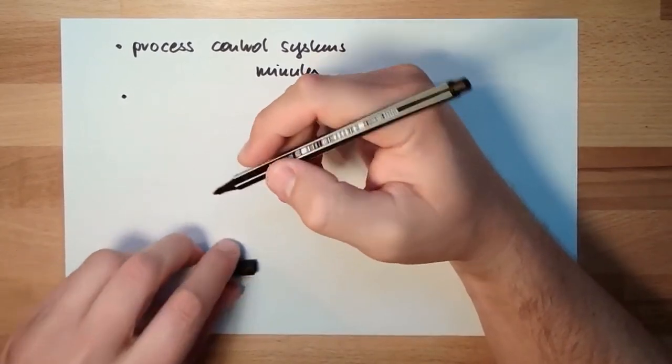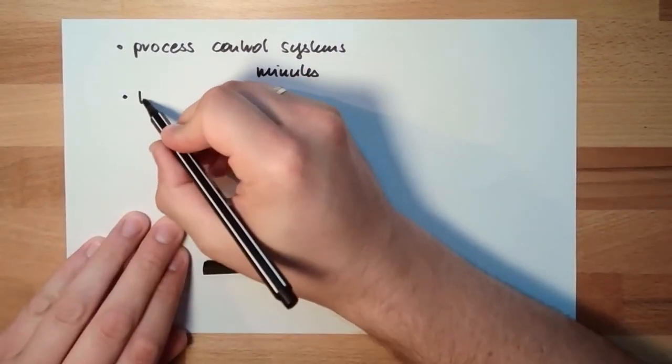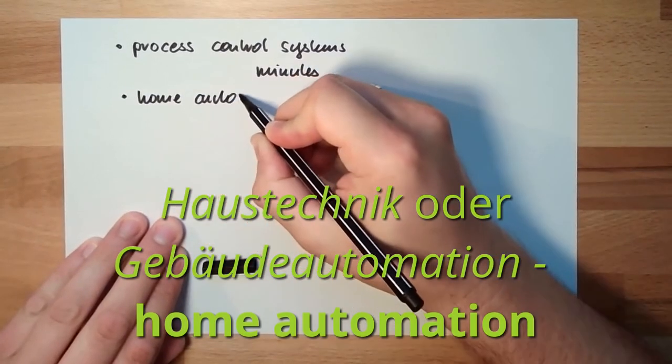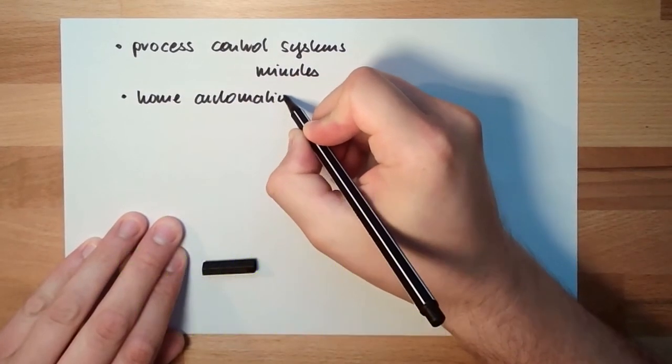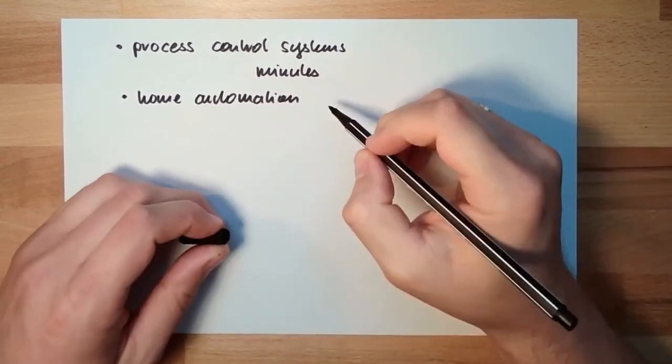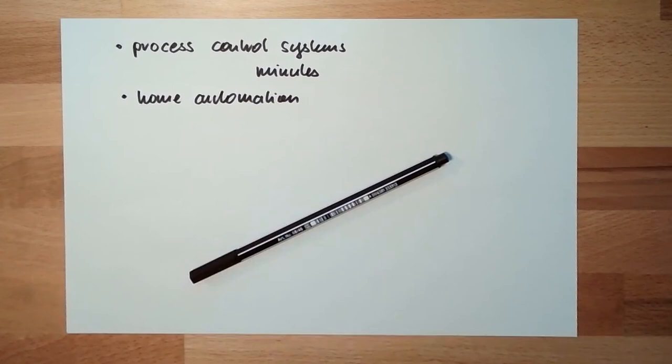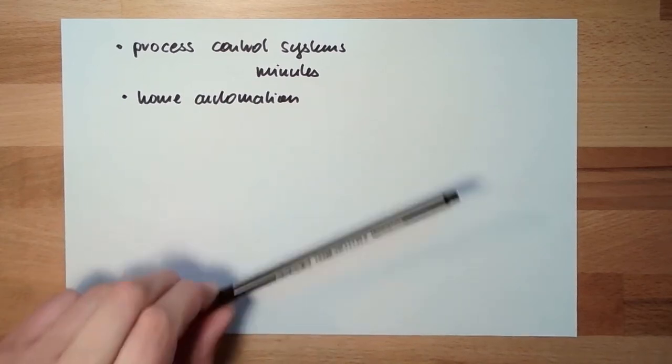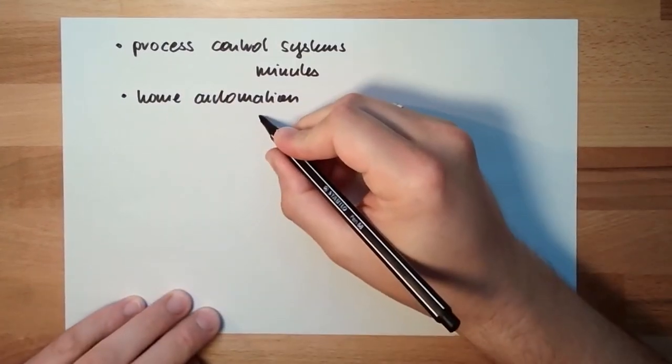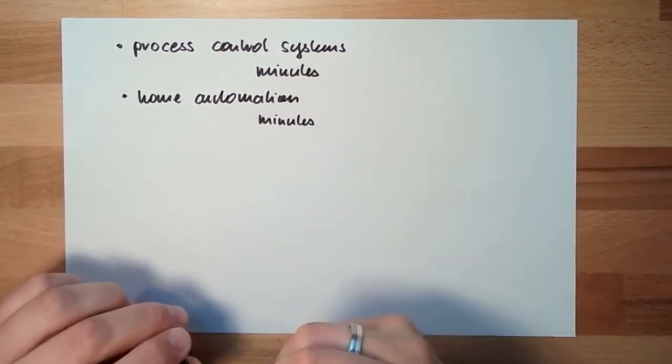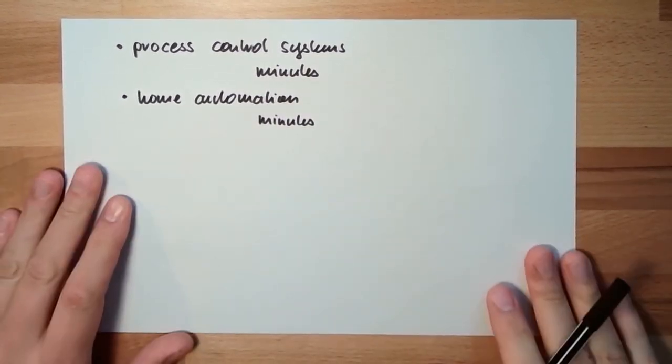Another one is home automation. Building automation, home automation, that's another big part. So we are going to control temperature, moisture. Also here, I would say we should be able to react within minutes.